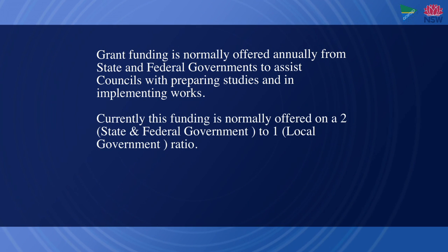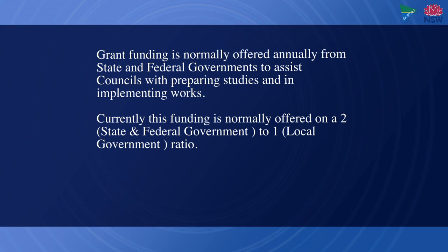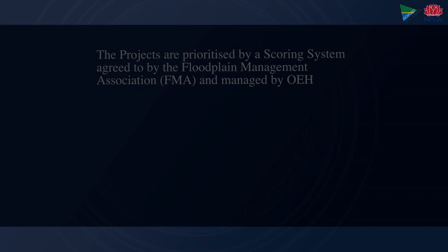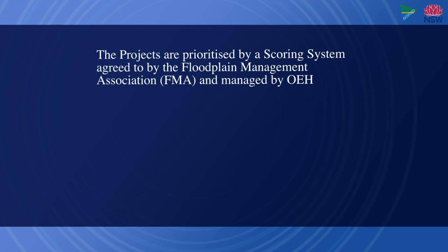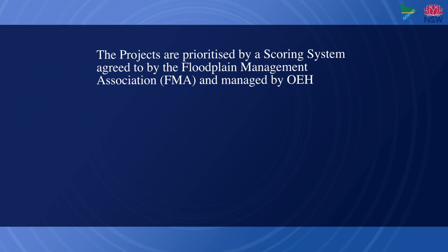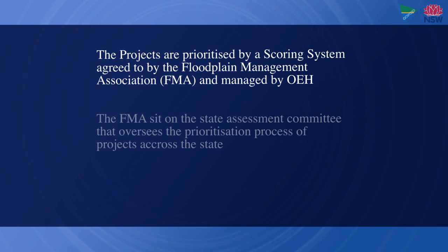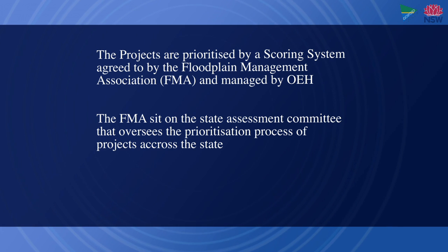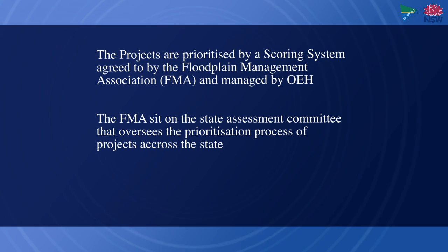Currently, this funding is normally offered on a two state and federal government to one local government ratio. Projects are prioritised based upon a scoring system agreed to by the FMA and managed by the Office of Environment and Heritage. The FMA sit on the State Assessment Committee that oversees the prioritisation process. Applications for funding are received annually and grants are announced on an annual basis.